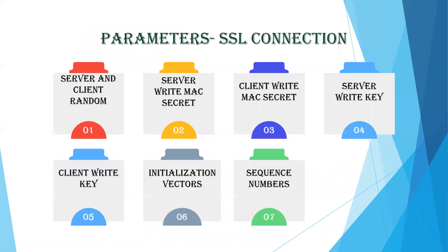Seeing about the parameters associated with SSL connection: your SSL connection has seven parameters. The first one is server and client random. As the name specifies, it is a sequence of bytes chosen by the client and the server for each of its connections, ensuring that based on the sequence number, data is communicated.